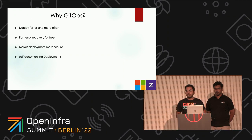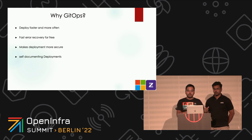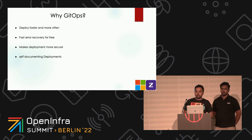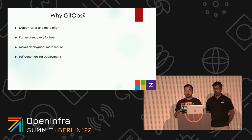Why GitOps? Because you can deploy faster and more often. Since all of your artifacts are stored in your Git repositories, you can be sure there are no manual changes or random scripts running in your environment. You go into the Git repository, make your changes, click the button, and you're sure it's going to match the desired state with the current state. You also have faster error recovery for free. With GitOps, you have a complete history of how your environment has changed over time, making error recovery as easy as issuing a Git revert. The Git record is then not just an audit log, but also a transactional log, and you can roll back and forth as many times as you want.